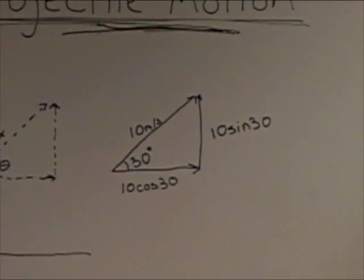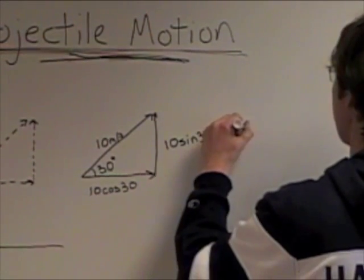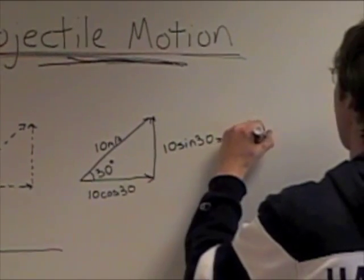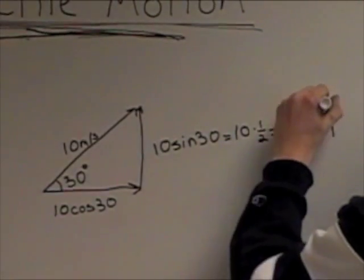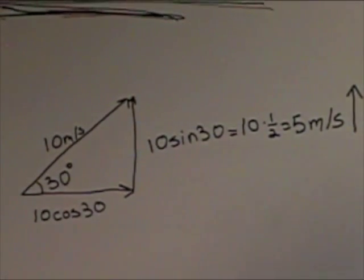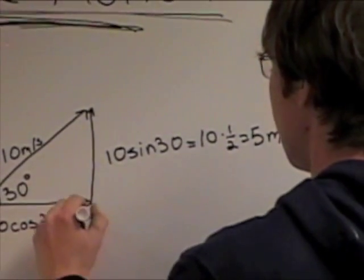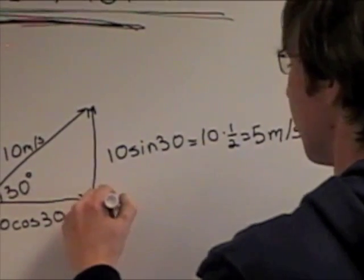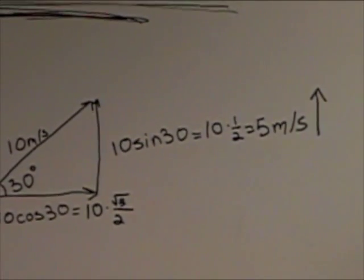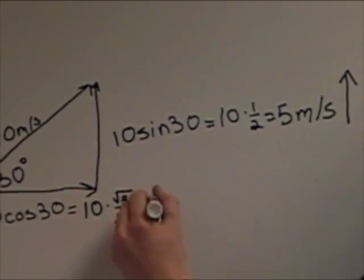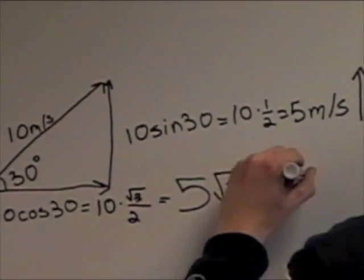Now sine 30 works out really well because it's actually 1 half. So 10 times 1 half is equal to 5 meters per second. And that's 5 meters per second upwards. Now cosine isn't quite as nice. But it comes out to be root 3 over 2. So 10 times root 3 over 2, which can be simplified to 5 root 3 meters per second.